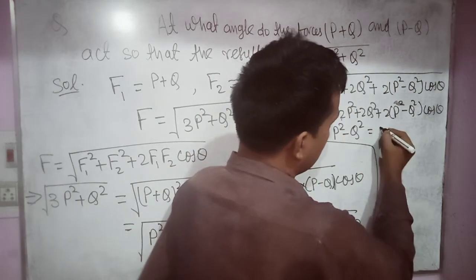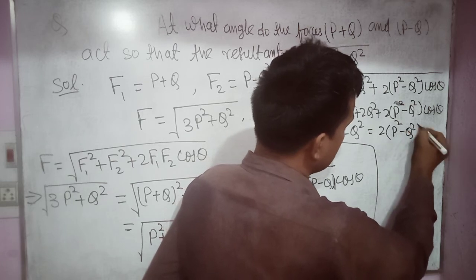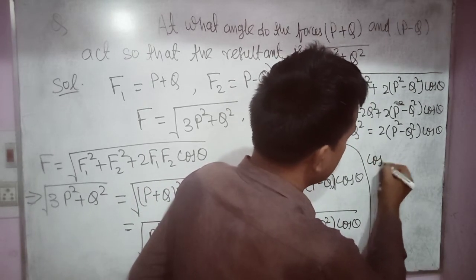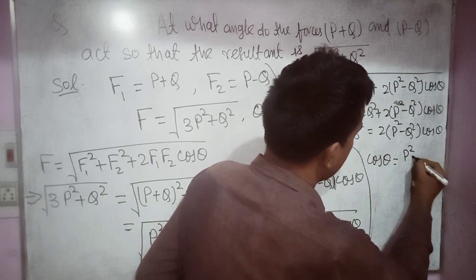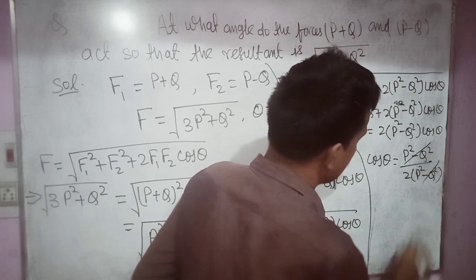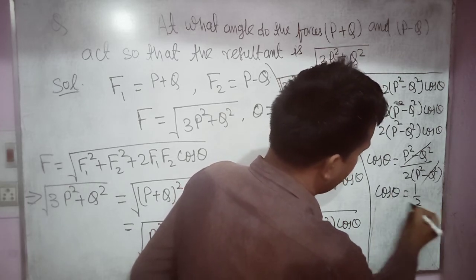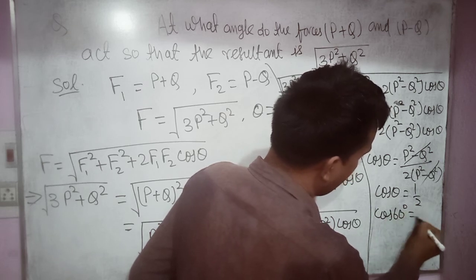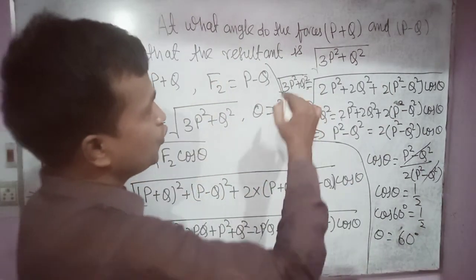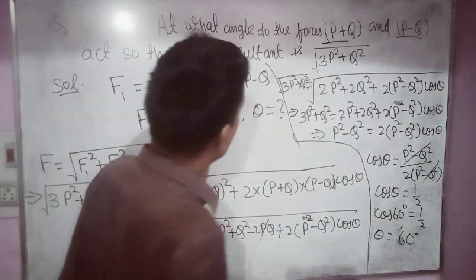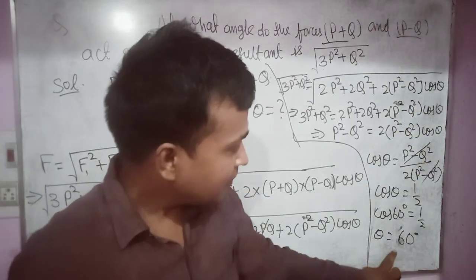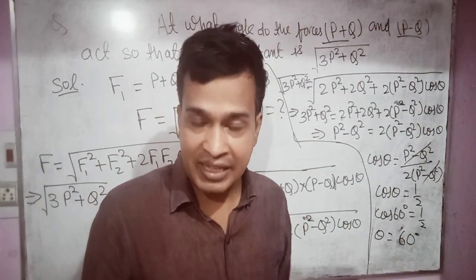So cos θ = (P² − Q²) / 2(P² − Q²). These two terms cancel out, giving cos θ = 1/2. Since cos 60° = 1/2, therefore θ = 60°. So the angle between the two vectors having magnitudes (P + Q) and (P − Q), whose resultant has magnitude √(3P² + Q²), is 60 degrees. That's all for today's lecture, thank you very much.